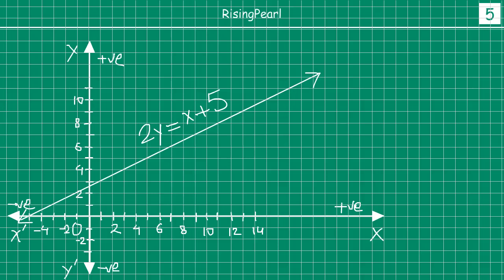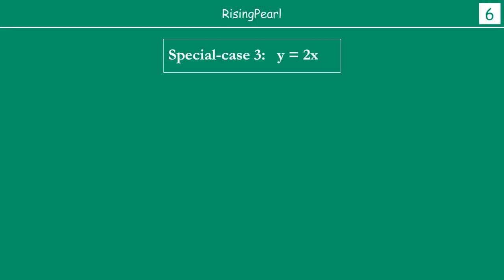Now today we are going to explore another kind of lines. This is special case three. Special case one was equations of lines going parallel to the y-axis; special case two was equations of lines going parallel to the x-axis. Now let us say you have the equation y equals to 2x. We want to find solutions, so we will express one variable in terms of the other and take some values for x to find the corresponding values for y.